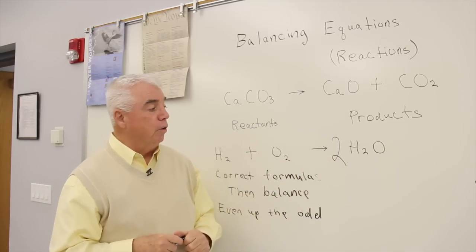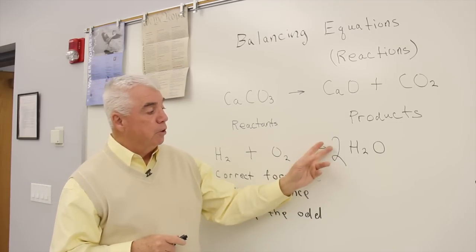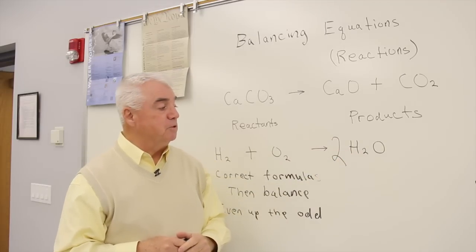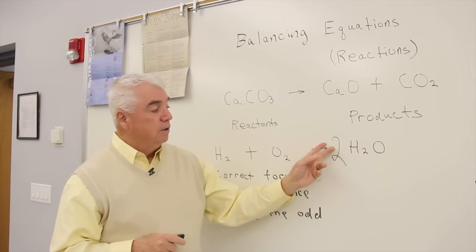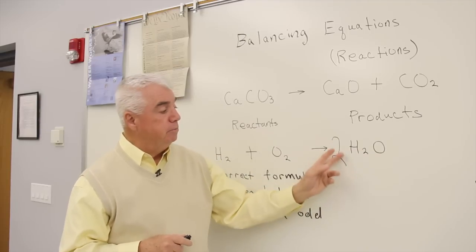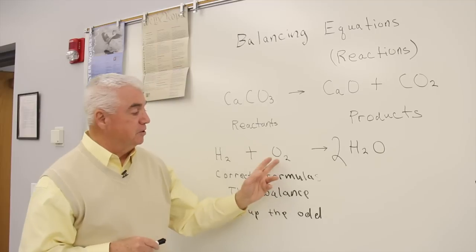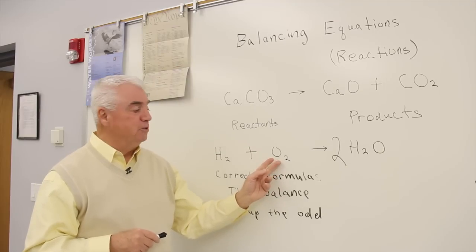This number 2 is called a coefficient, and it's the coefficient times the subscript that tells us the number of atoms that we have in total. So 2 times 2, I'd have 4 hydrogen atoms. 2 times 1, we'd have 2 oxygens. Hey, our oxygens are in balance.